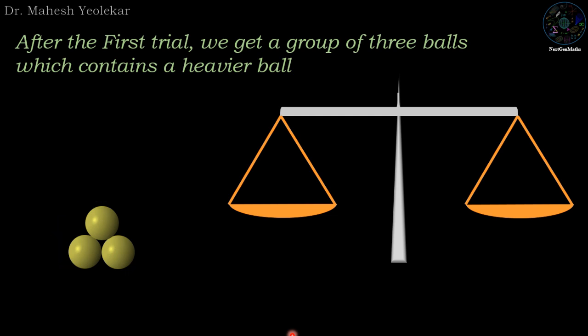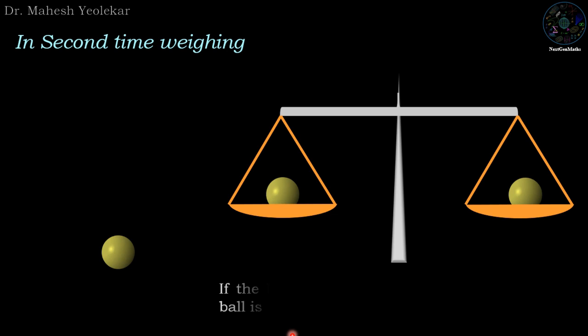Now in the next trial we put two balls out of three balls on the two pans of the balance. If the balance is at equilibrium then the heavier ball is the third ball.